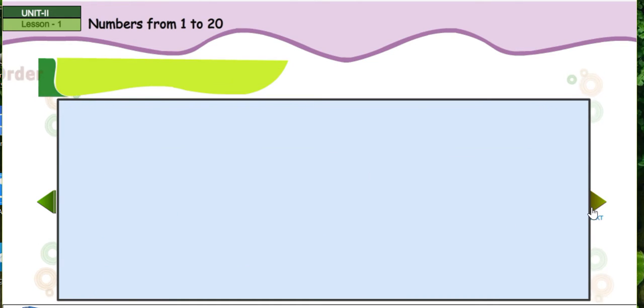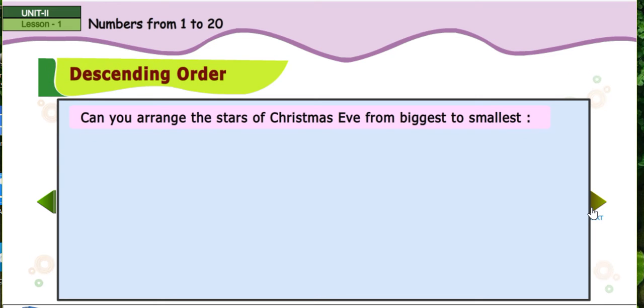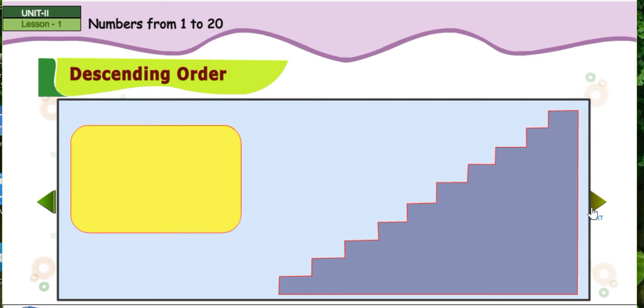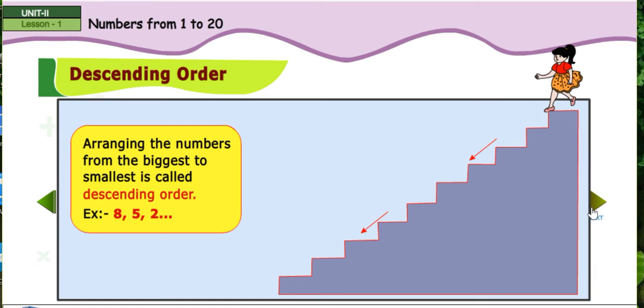Descending order. Can you arrange the stars of Christmas Eve from biggest to smallest? Biggest star, big star, small star, tiny star. Ten, nine, eight, seven, six, five, four, three, two, one.